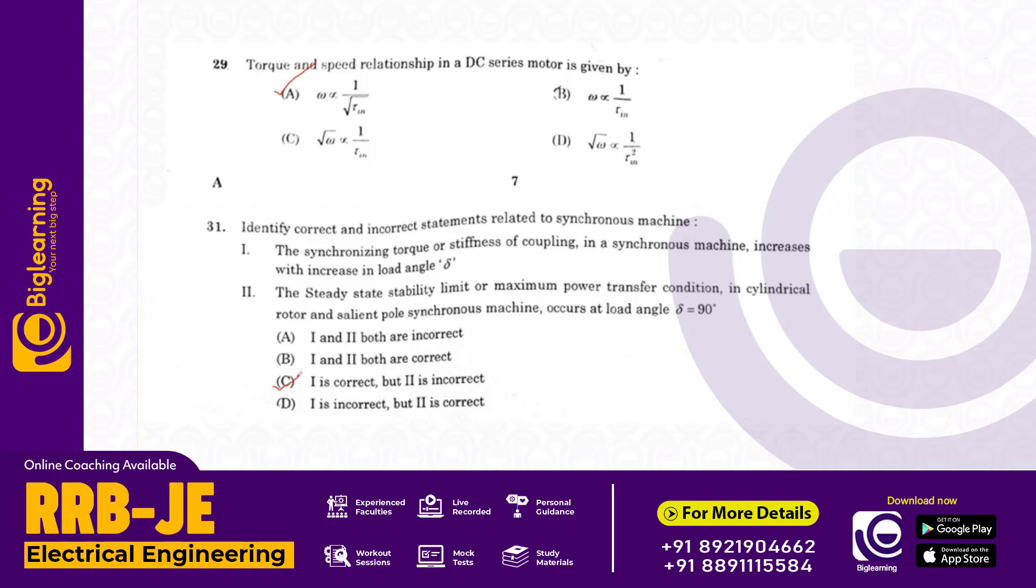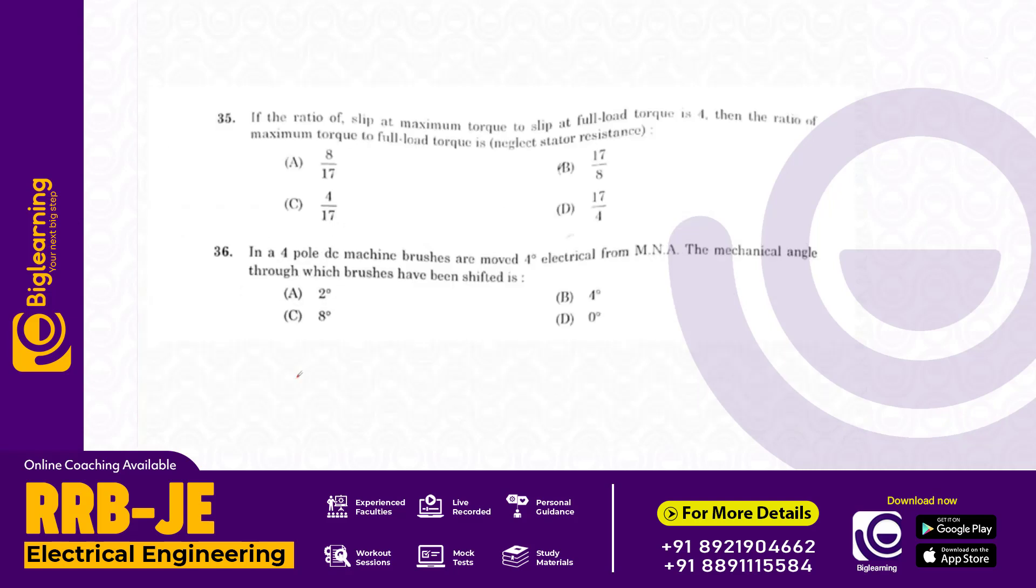Find the ratio of slip at maximum torque to slip at full load torque. If it is four, the ratio of maximum torque to full load torque is 17 by 8, neglecting stator resistance. Answer B.